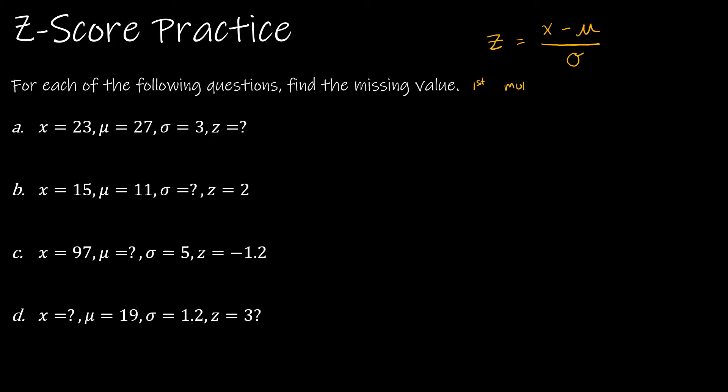Just remember, what we're going to do any time that we're finding anything besides z is first we're going to multiply each side by the standard deviation, sigma, because that will then make it so that we no longer have a fraction because fractions aren't great to deal with. So for the first question, we don't even have to do that. For the first question, it says find z. So I'm saying z, which is unknown, is x 23 minus μ 27 divided by the standard deviation of 3. 23 minus 27 is negative 4 divided by 3, negative 1.3, and I'm going to go out to three places. That's all I have to do for the first one.